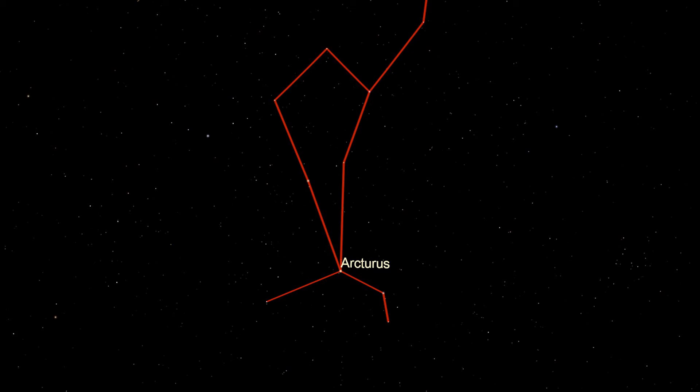Arcturus is what's known as a red giant, meaning it's in a later stage of its life and has swelled up in size to about 25 times as large as the sun. Incidentally, it's about 3 light-years away from another star, Mufrid, also in Boötes, and from Mufrid, Arcturus would appear as bright as Venus does from Earth.